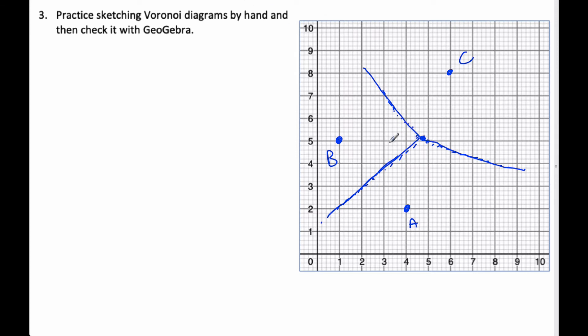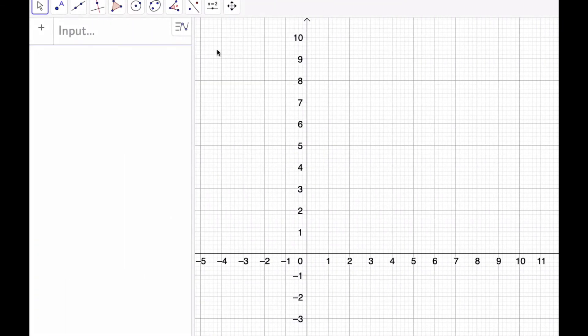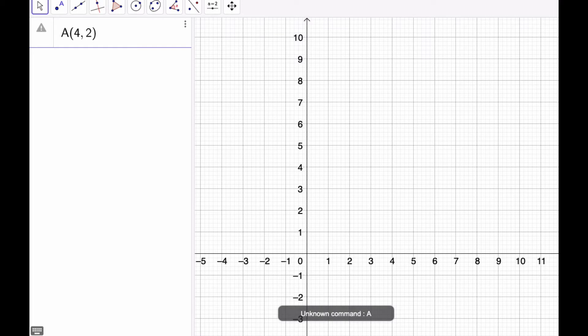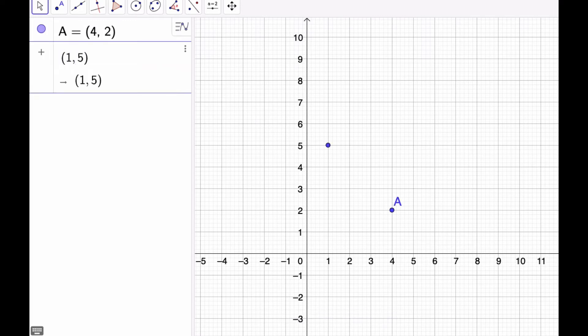Okay, so here we have our Voronoi diagram, and I want to check this as I go with GeoGebra. And so, I'm going to go over here, over to GeoGebra.org, the classic one, and I just type in my points. I was A, it was 4 comma 2. B is 1 comma 5. And I don't have to put A and B because it gets confused, it makes its own values. And the last one I said was 6 comma 8.